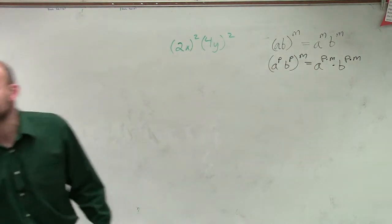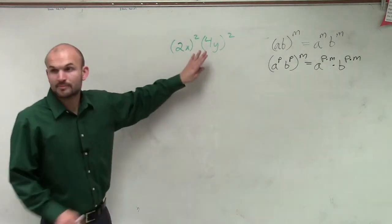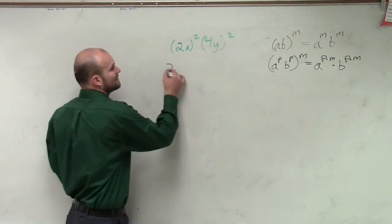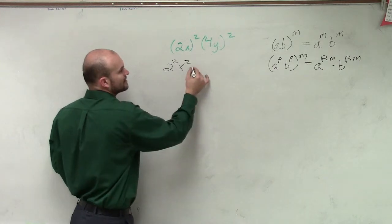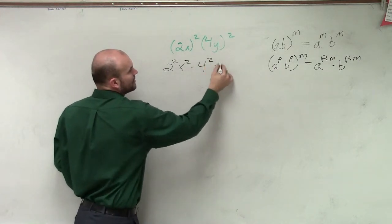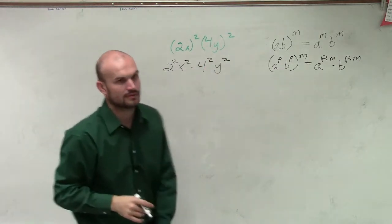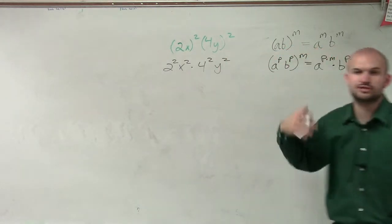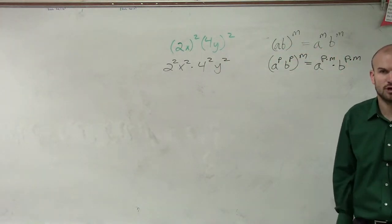Sorry Chris, I don't have any more time. You're going to have to move up here. So now what I'm going to do is I'm going to apply this. So therefore I have 2 squared x squared times 4 squared y squared. So you just distribute that 2 into both terms.